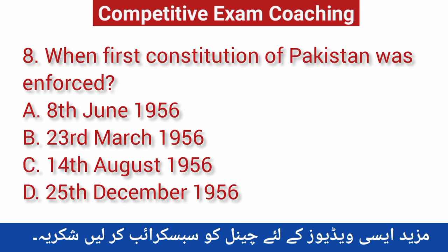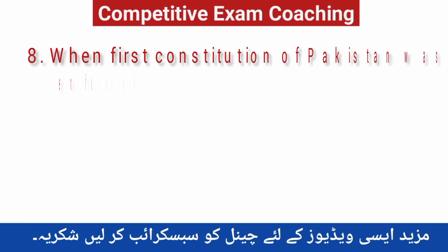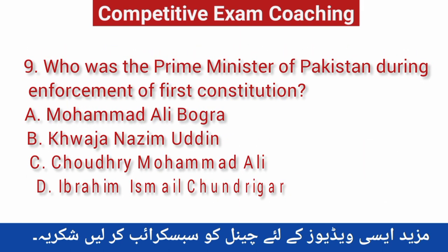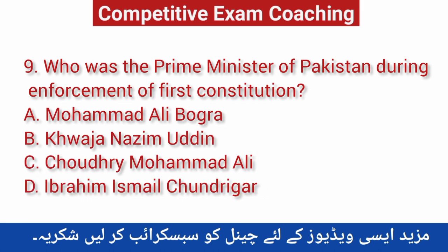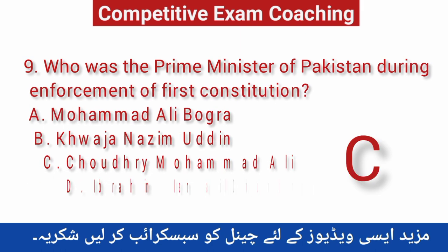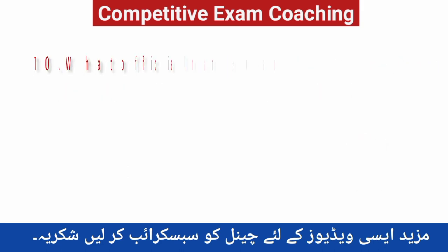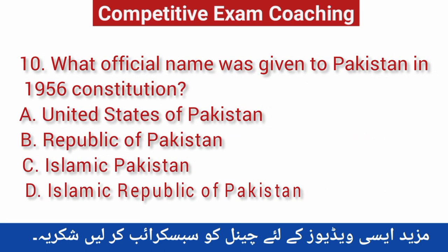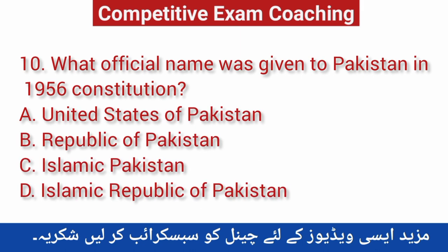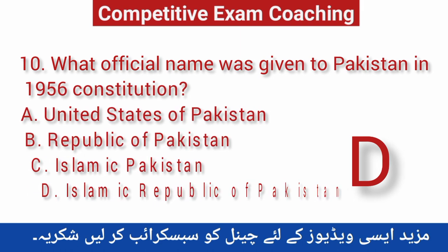Question number eight: When was the first constitution of Pakistan enforced? Correct answer is B — 23rd March 1956. Question number nine: Who was the Prime Minister of Pakistan during enforcement of the first constitution? Correct answer is C — Chaudhary Muhammad Ali. Question number ten: What official name was given to Pakistan in the 1956 constitution? Correct answer is D — Islamic Republic of Pakistan.